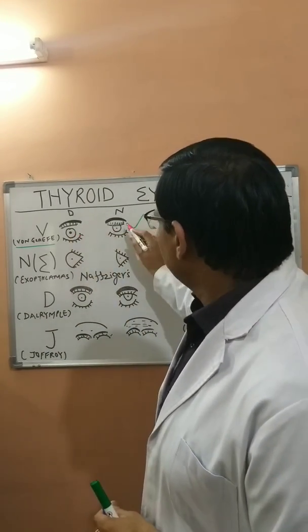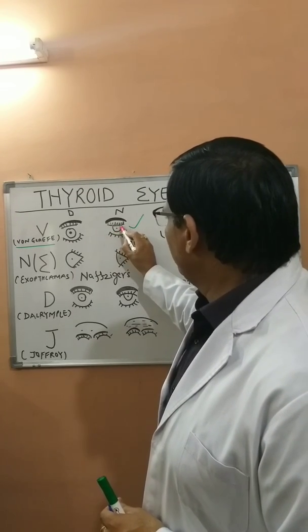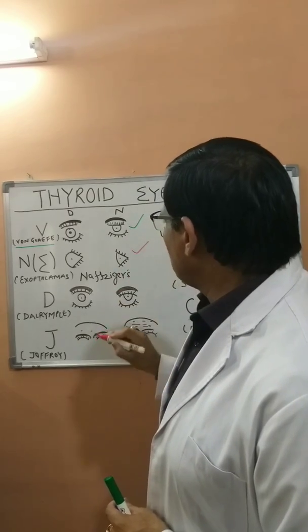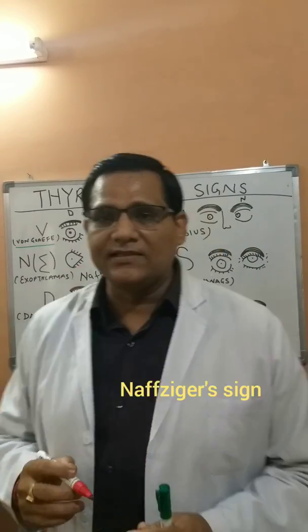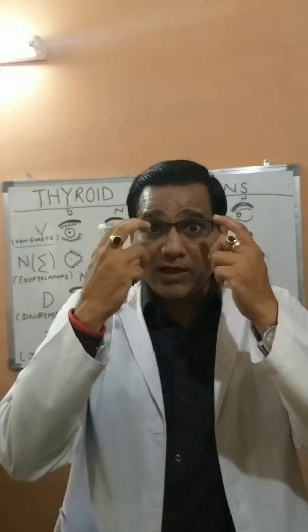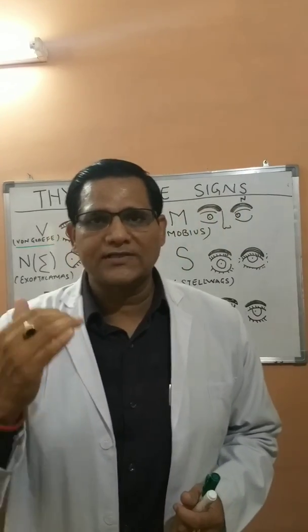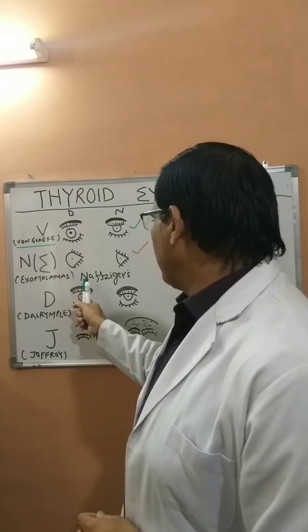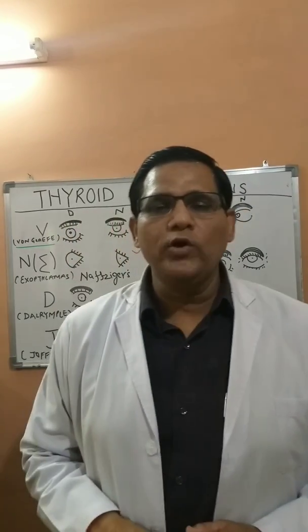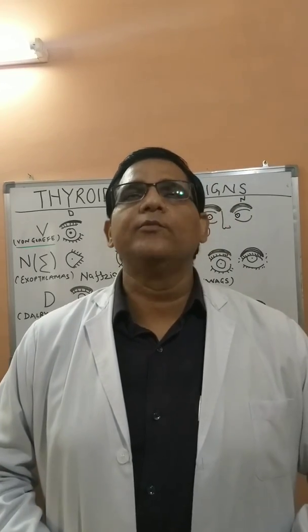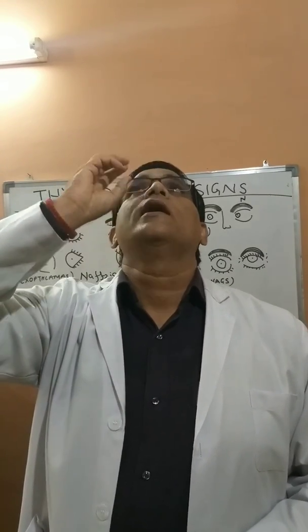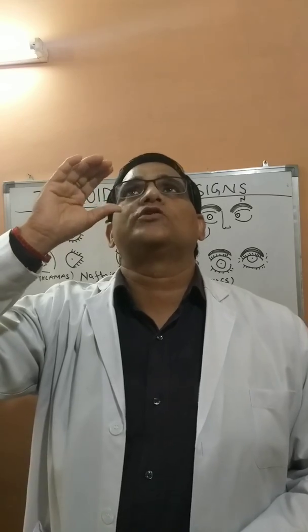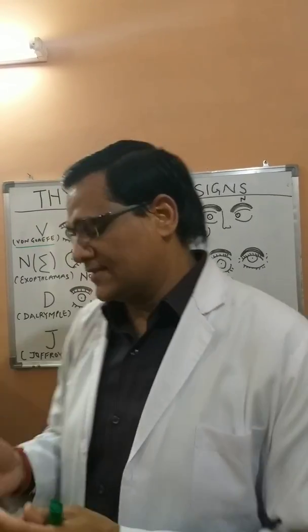In a normal eye, you won't be able to see the upper part of the sclera. The next sign is exophthalmos, demonstrated by Naffziger's sign. In this sign, there is protrusion of the eyeball due to deposition of mucopolysaccharides. To demonstrate it, ask the patient to sit on a stool, bend their neck forward, then stand behind the patient and compare both eyeballs — you will see the eyeball protruding out.